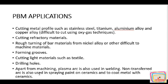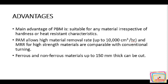Advantages of this process: the main advantage of PBM is that it is suitable for any material irrespective of hardness or heat-resistant characteristics. PBM allows a high material removal rate of up to 10,000 cm³ per hour, and the MRR of high-strength materials is comparable with conventional turning. Ferrous and non-ferrous metals up to 150 mm thickness can be cut.